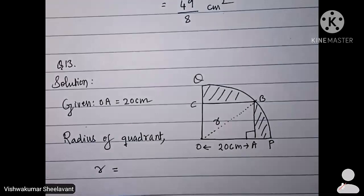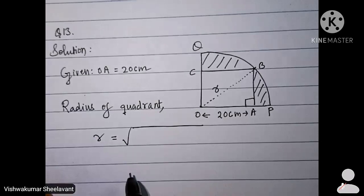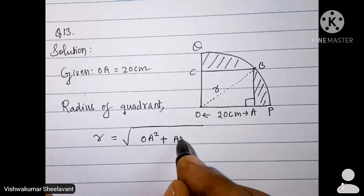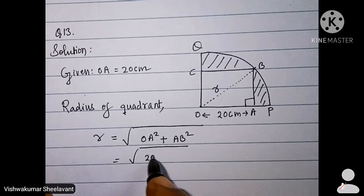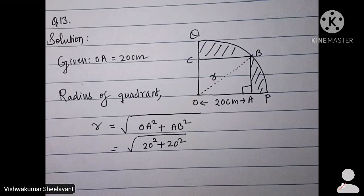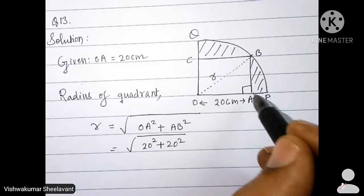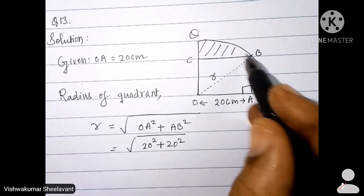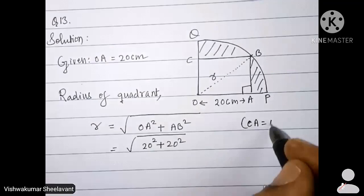R is equal to, by Pythagoras theorem, under root OA square plus AB square. That is equal to 20 square plus 20 square. Why 20 square plus 20 square? OA equal to AB equal to BC equal to CO because in a square all the side lengths are equal. OA equal to AB.